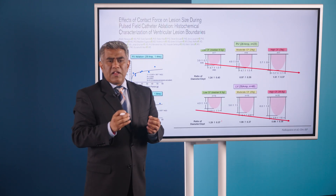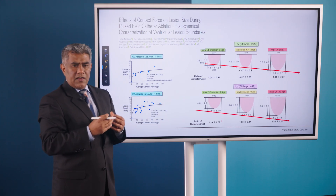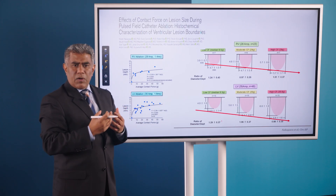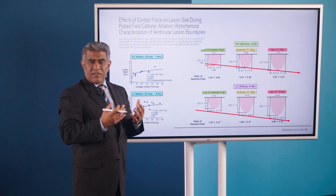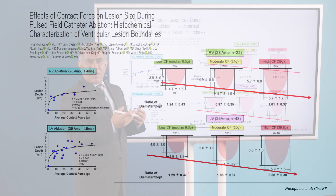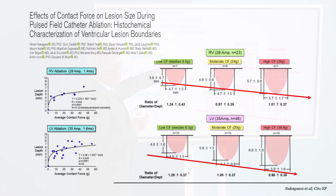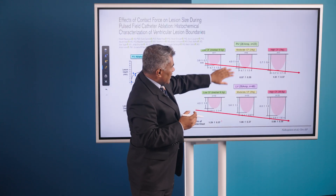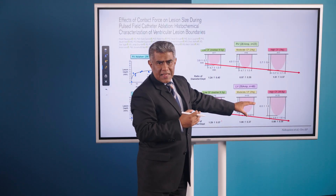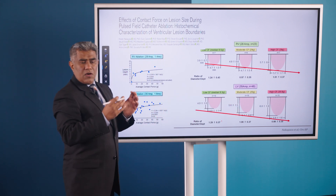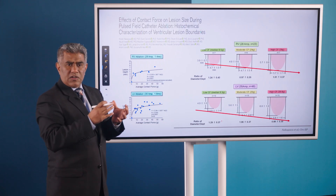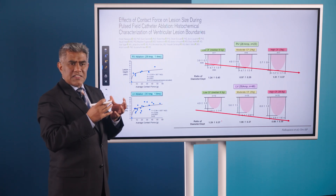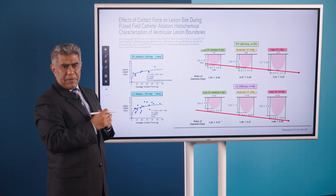When we talk about small catheters, such as a 3.5-millimeter-tipped catheter, there's been a lot of debate about the importance of contact force. There are some papers that say this is not that relevant, and some that say it is relevant. This is work from Dr. Nakagawa, who shows that with increasing contact force, both in the right ventricle and in the left ventricle, you have an increase in lesion depth. One peculiar aspect of pulse field ablation compared to radio frequency is that as you increase the contact force, it impacts the depth more than the width, as per this particular paper.